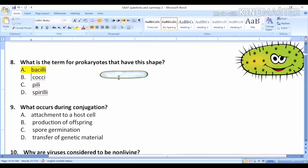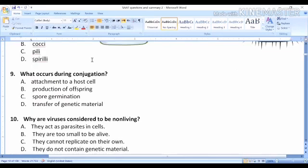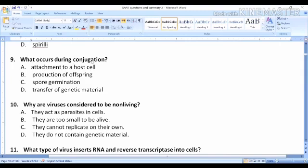What occurs during conjugation? Conjugation actually is the process of transferring genetic material. It's a sexual process that happens in bacteria and paramecium. They do this to be different, so the answer is transfer of genetic material.